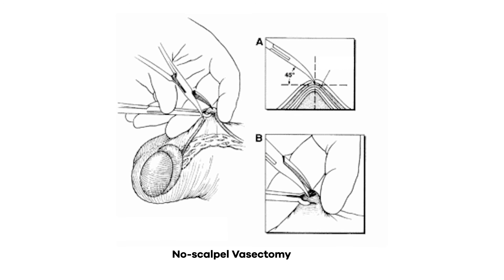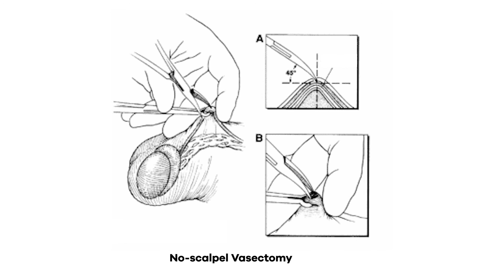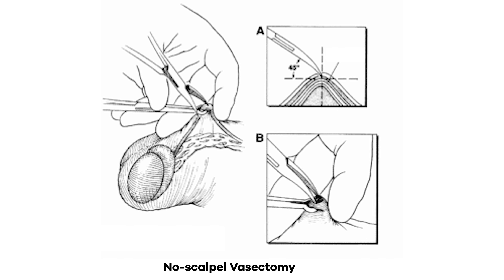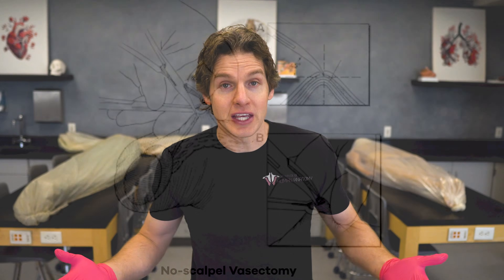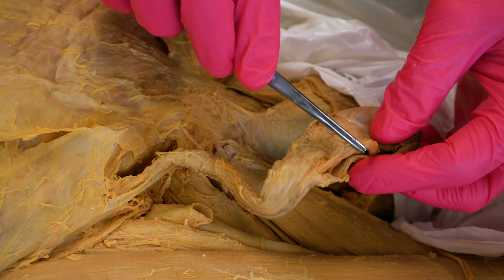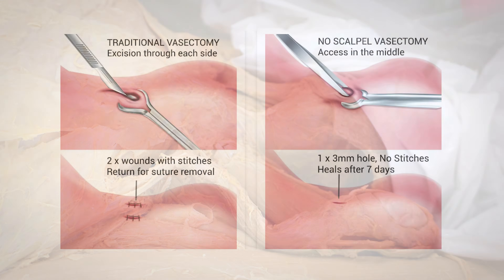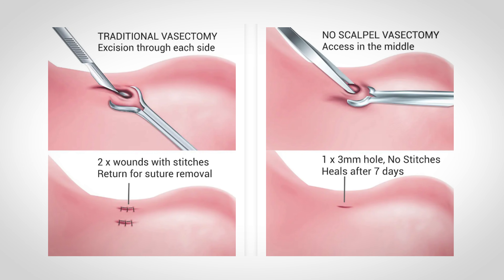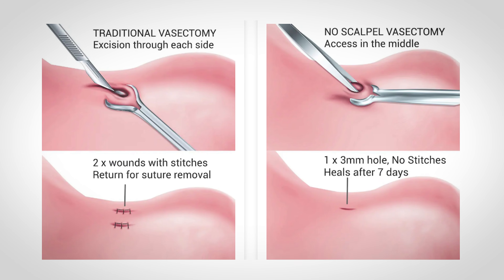The no-scalpel vasectomy uses a puncturing tool to puncture through the scrotal tissue. A lot of people will think, well, what's the main difference? You still have to go through my scrotum. And I agree, because the end game is still to isolate the tube called the vas deferens. It's just that the no-scalpel approach tends to be associated with less pain and fewer complications. Both are pretty effective, but the no-scalpel approach is a little bit better and is becoming the more common type performed.